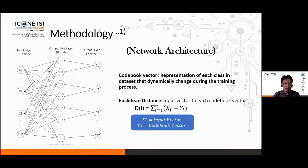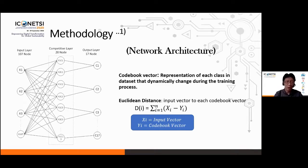The value of the codebook vector is dynamically changed during the training process. LVQ uses Euclidean distance to measure the distance between the input and codebook vector, as shown in the red circle in the picture.